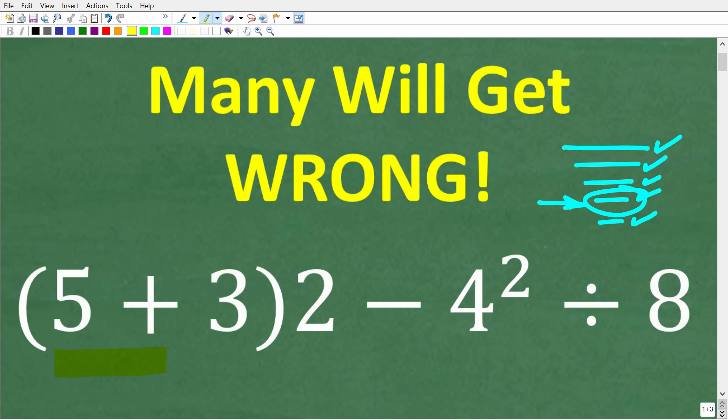All right, so one more time, we have 5 plus 3 in parentheses times 2 minus 4 squared divided by 8. How do you solve this problem without a calculator? Well, let's take a look at the full solution right now.